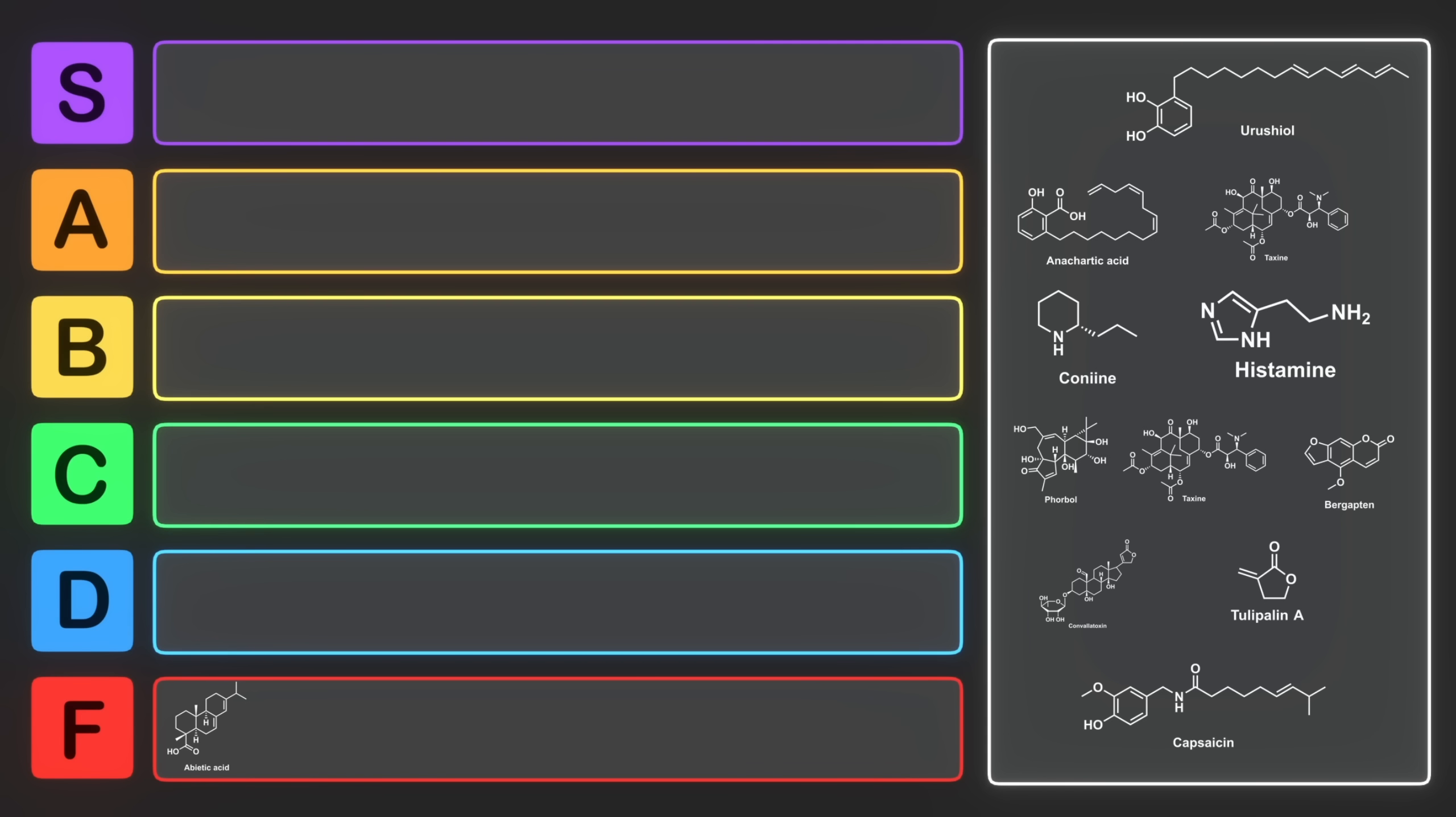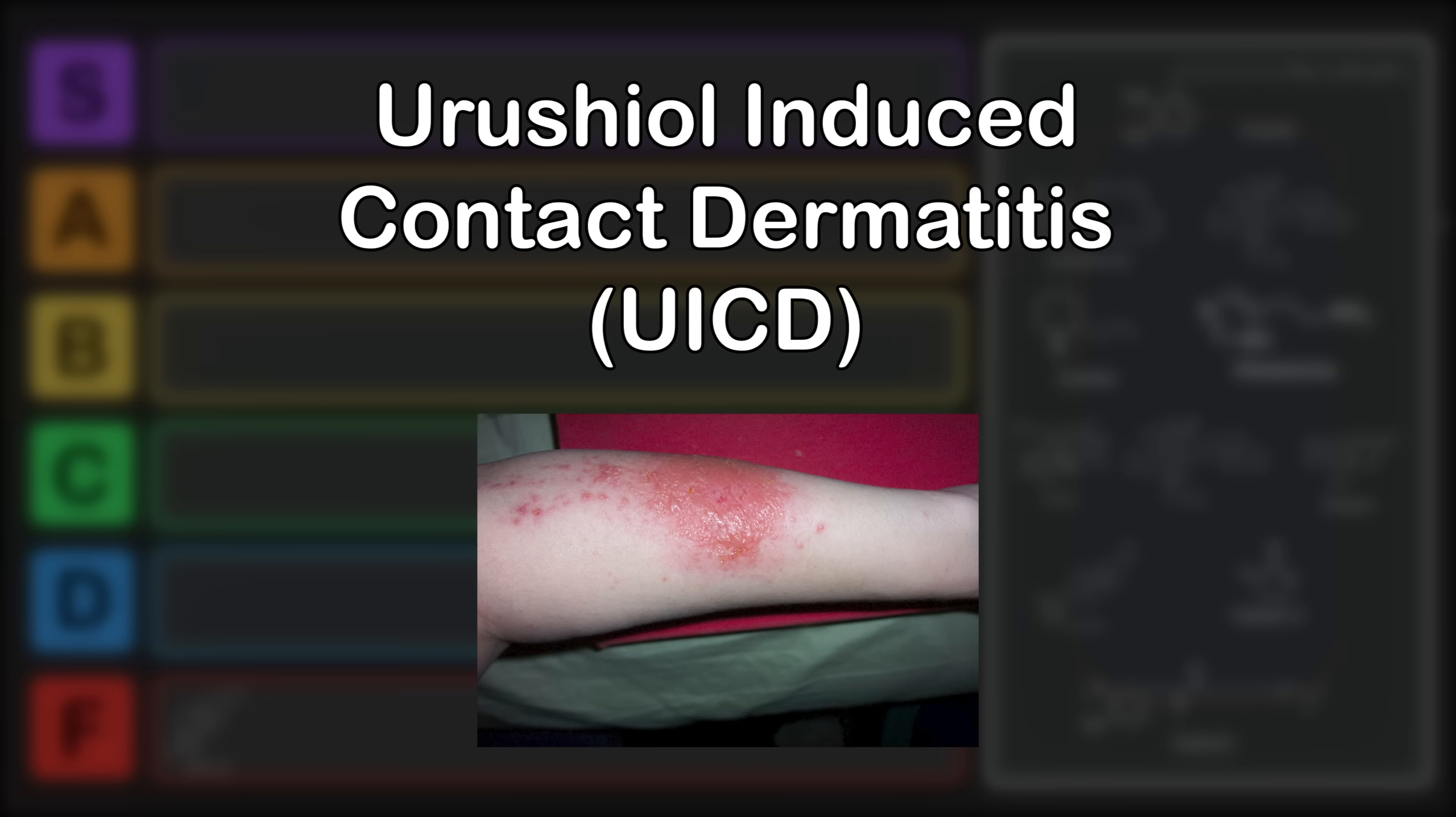For example, western poison oak urushiol contains mostly C-17 side chains, while poison ivy and poison sumac mostly contain catechols with C-15 side chains, meaning that it's 15 carbons long. Now, if you've ever taken a hike in shorts or do a lot of yard work, you've likely run into these urushiol-containing plants. Contact with them leads to a condition known as urushiol-induced contact dermatitis, essentially a major allergic reaction.